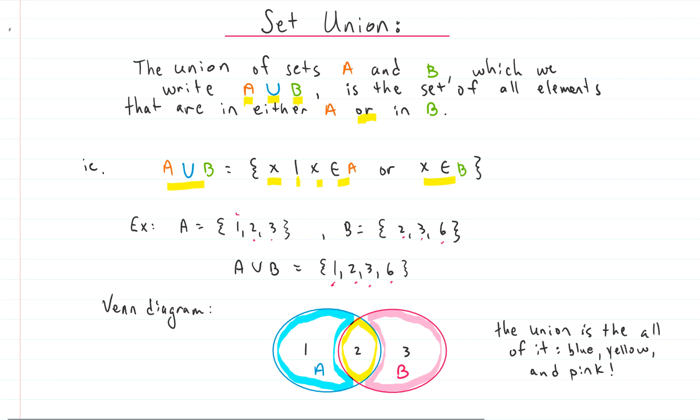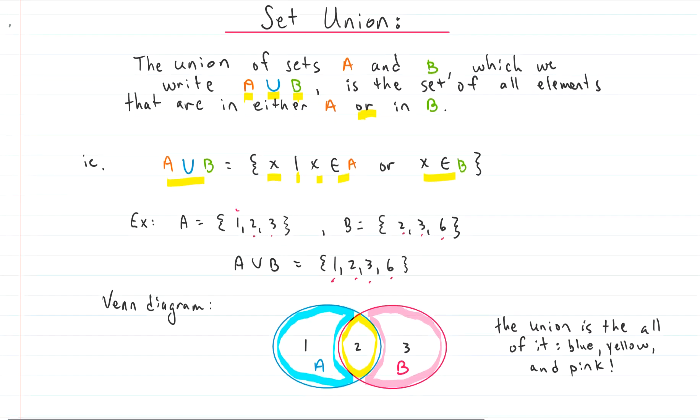And if we look at our Venn diagram again, then our union, A union B, would be everything: the blue, the yellow, and the pink. Hope this was helpful. Hope you enjoyed it. I'd love to hear what you thought. Leave a comment. Give me a like. Thanks for watching. Have a good day. Bye.